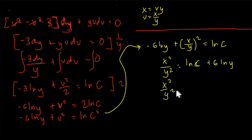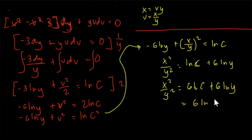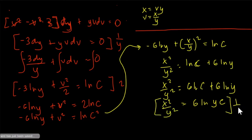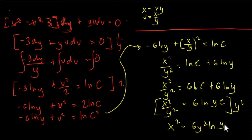Combining the logarithm terms: x²/y² = 6·ln(c) + 6·ln(y) = 6·ln(cy). Multiplying both sides by y²: x² = 6y²·ln(cy). And that is now our final answer.